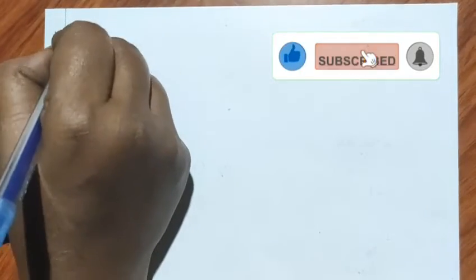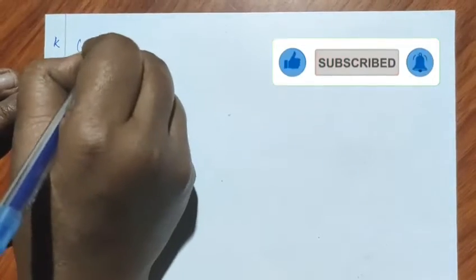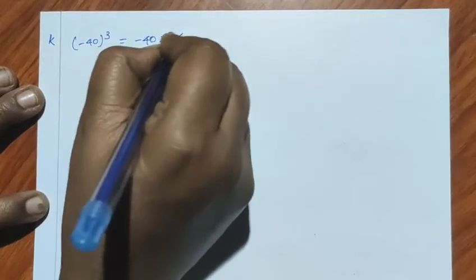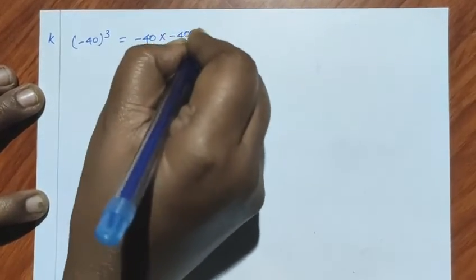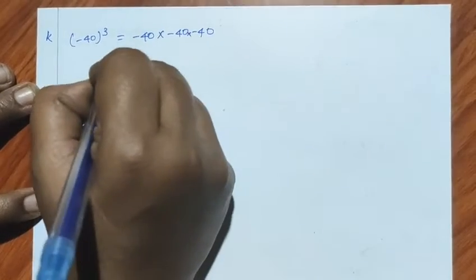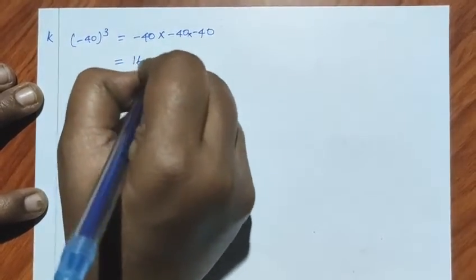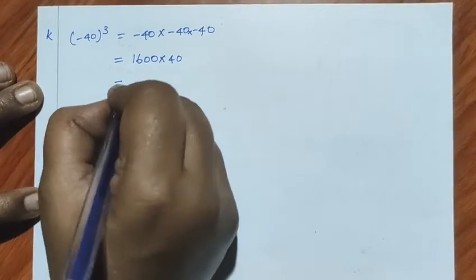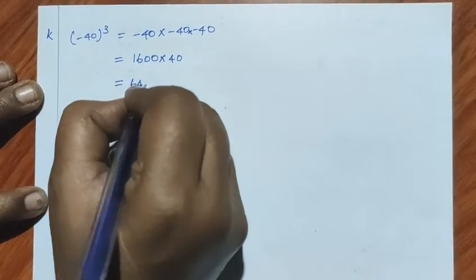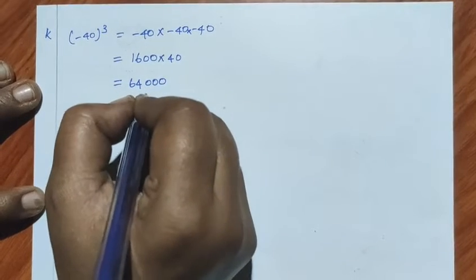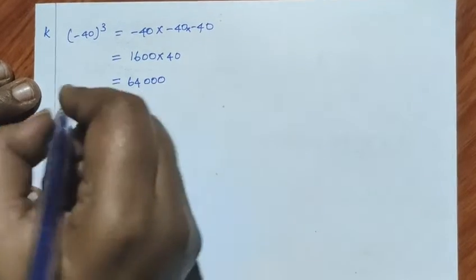K sum: the whole cube is minus 40 into minus 40 into minus 40. So 4 fours are 16, 1600 into 40; 16 fours are 64, so it is 64,000. The answer is minus 64,000.